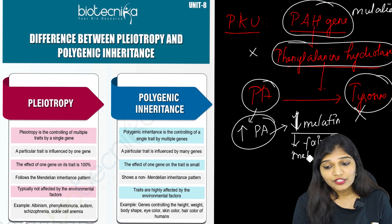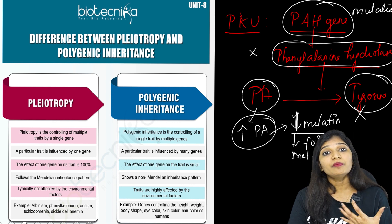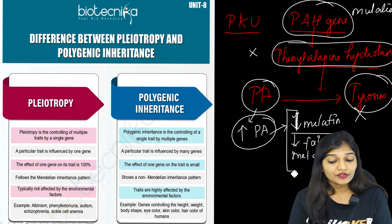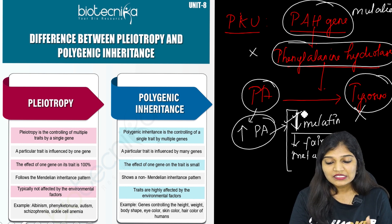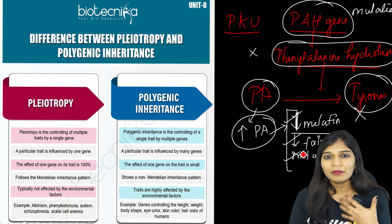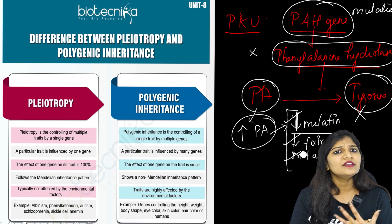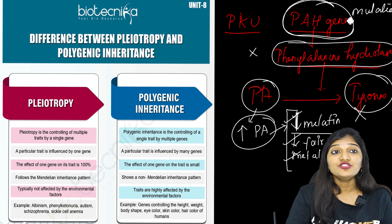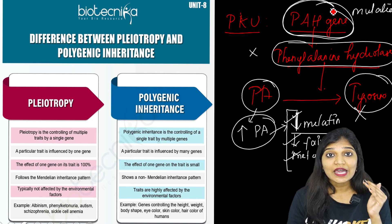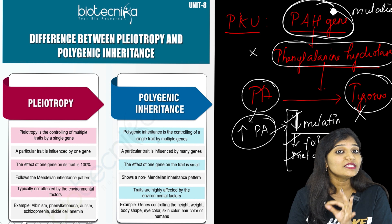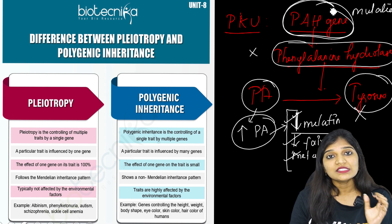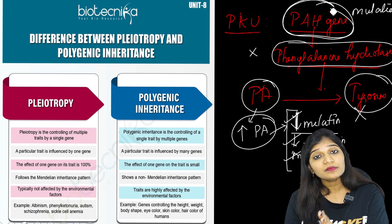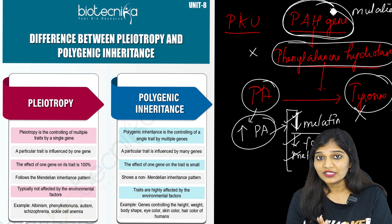People with PKU also have mental retardation and abnormal postures — these are all different characters. Less melanin, fair skin, mental retardation — these are all different characters, but who controls them? One gene — the PAH gene — is actually controlling all these characters. This is pleiotropy: one gene controlling multiple characters or traits.